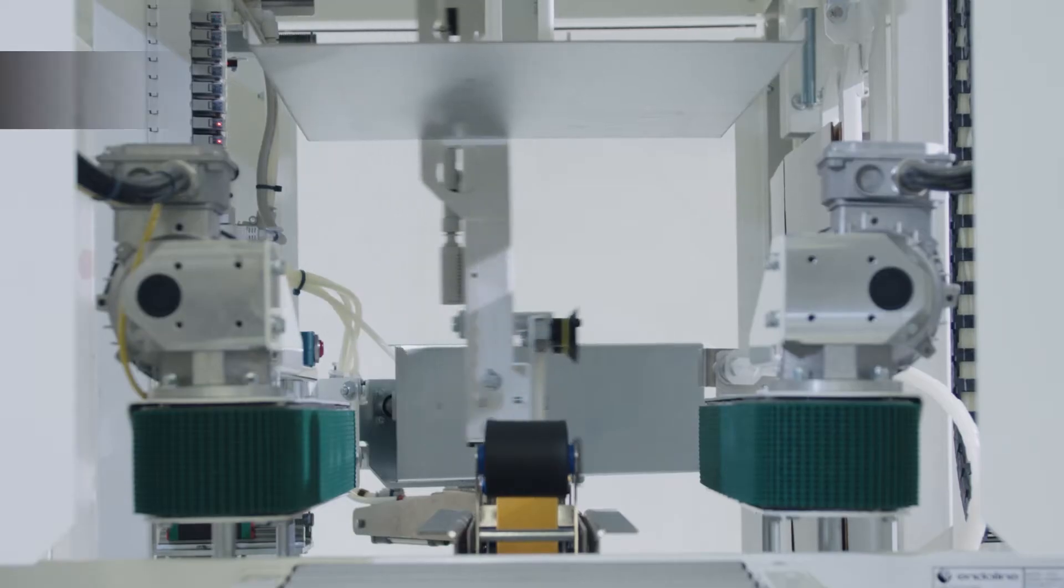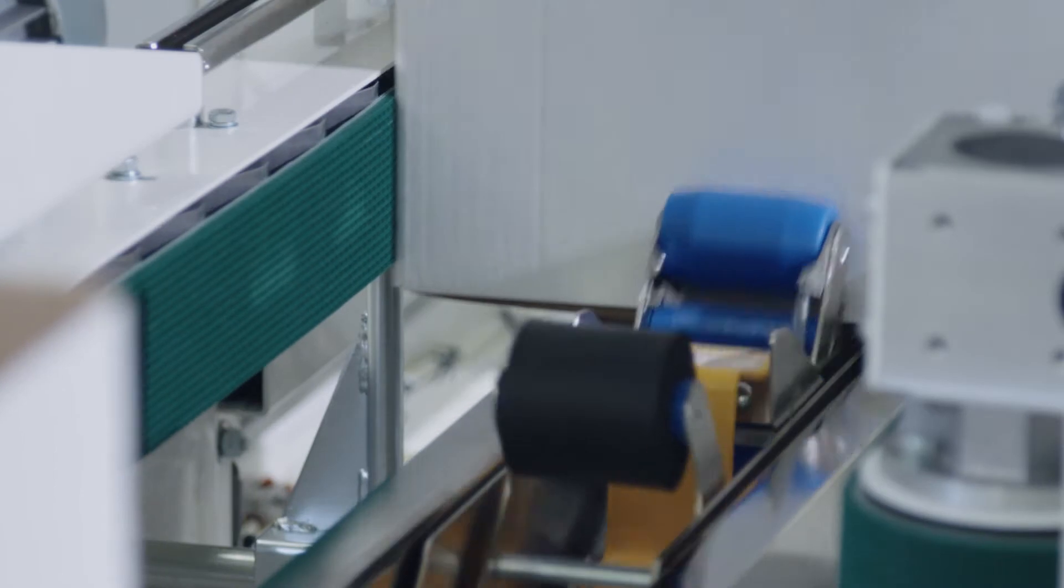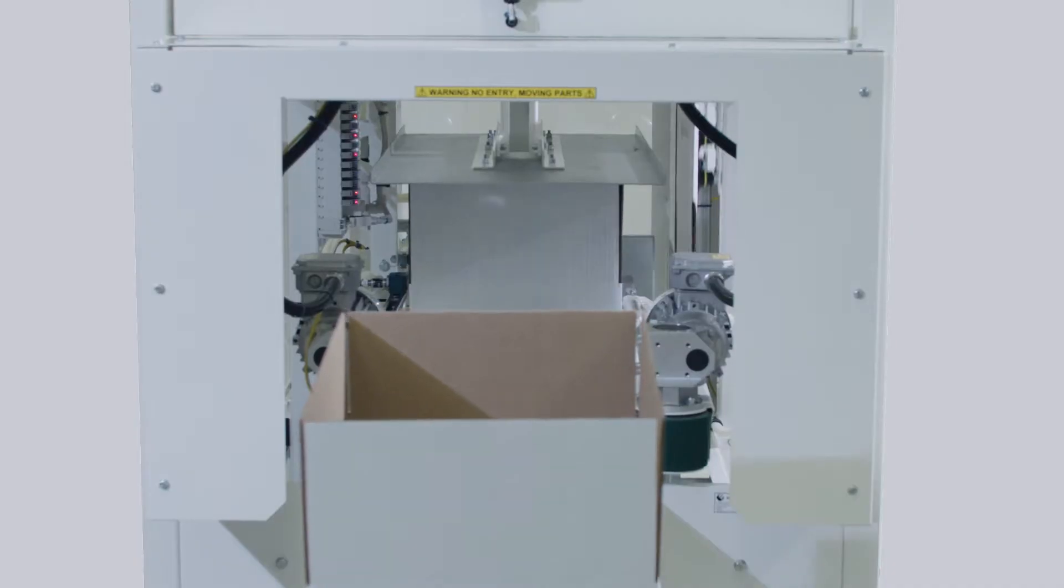The 251 Case Erector erects up to 10 cases per minute, then seals the base with self-adhesive tape for feeding into a case packer or a hand packing station.